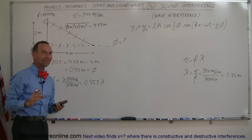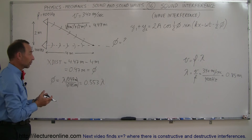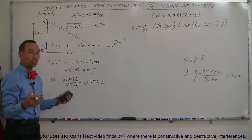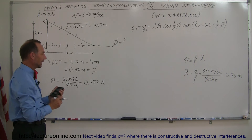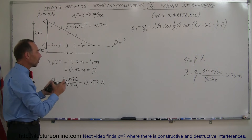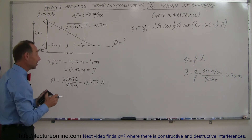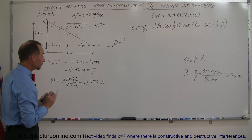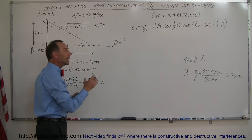Since 0.553 wavelengths is not exactly half a wavelength — where they would be completely destructively interfering — and not exactly a whole wavelength — where they'd be back in phase with complete constructive interference — it's somewhere in between. So we need another approach to find the resulting amplitude.